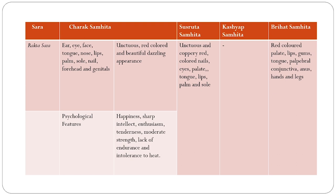The psychological features of Rakta Sara are told as Sukha, Uddhatam, Medham, Manaswatam, Saukumaryam, Anati-Bala, Akleshta, Ushna-Asahishnu. That is, they are happy, sharp-intellected — whereas in Tvak Sara they are knowledgeable, the Rakta Sara individual has sharp intellect power — enthusiastic, with tenderness and moderate strength. They cannot tolerate klesh even in small amounts and are intolerant to heat. These features are told by Acharya Charak.